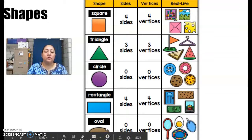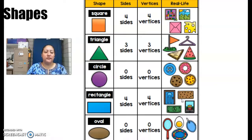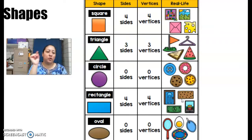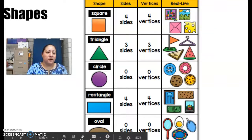And then also the oval, which is kind of like a stretched out circle. It has no sides and no vertices, just like the circle, because they're circular, they're round. They don't have corners or lines. Okay, so let's start our lesson.